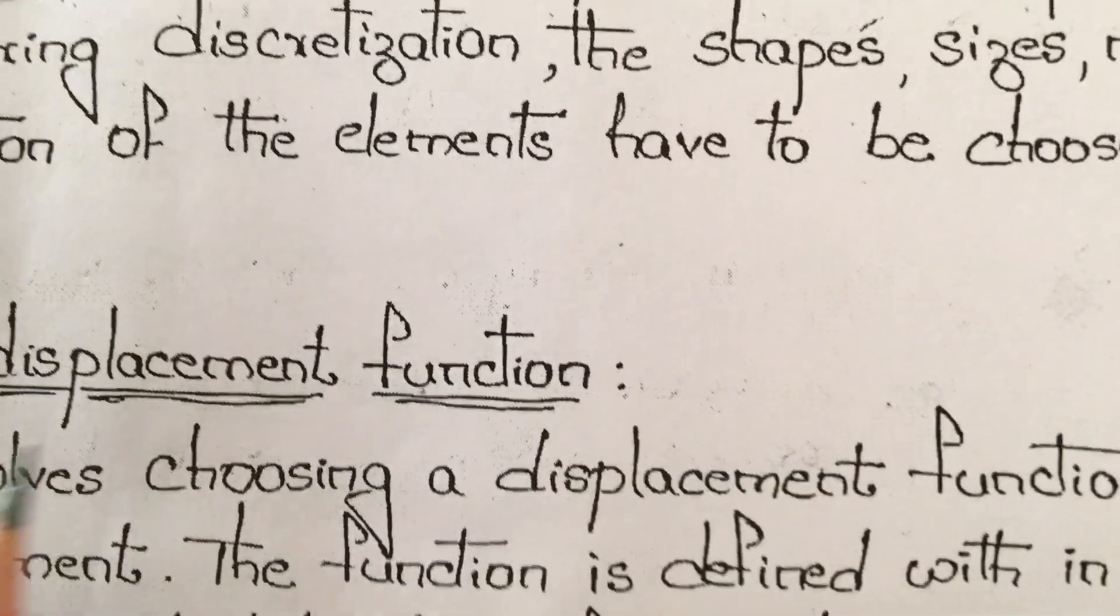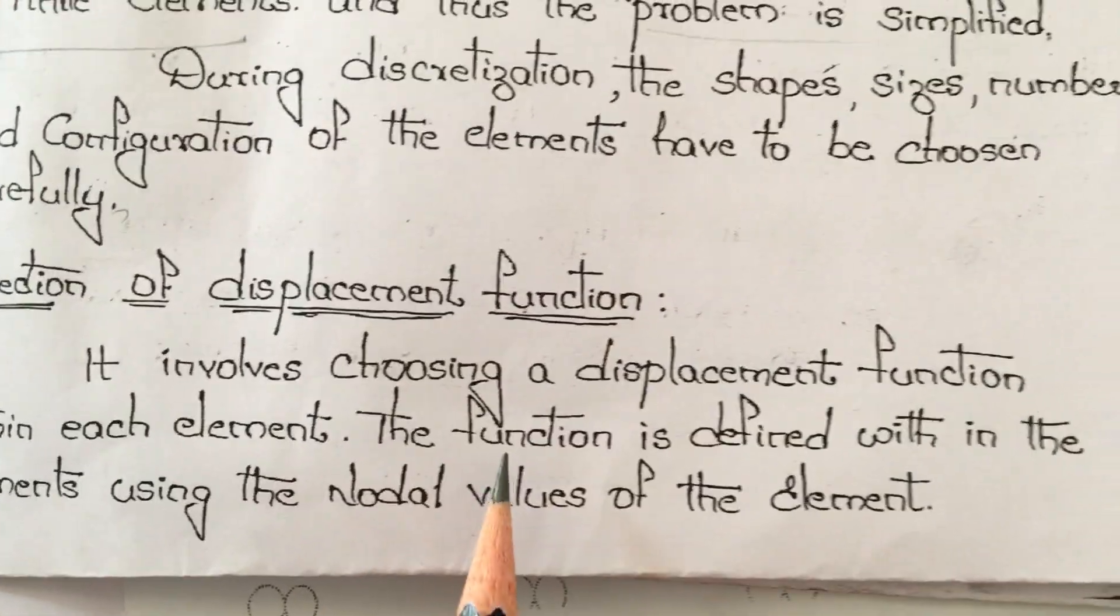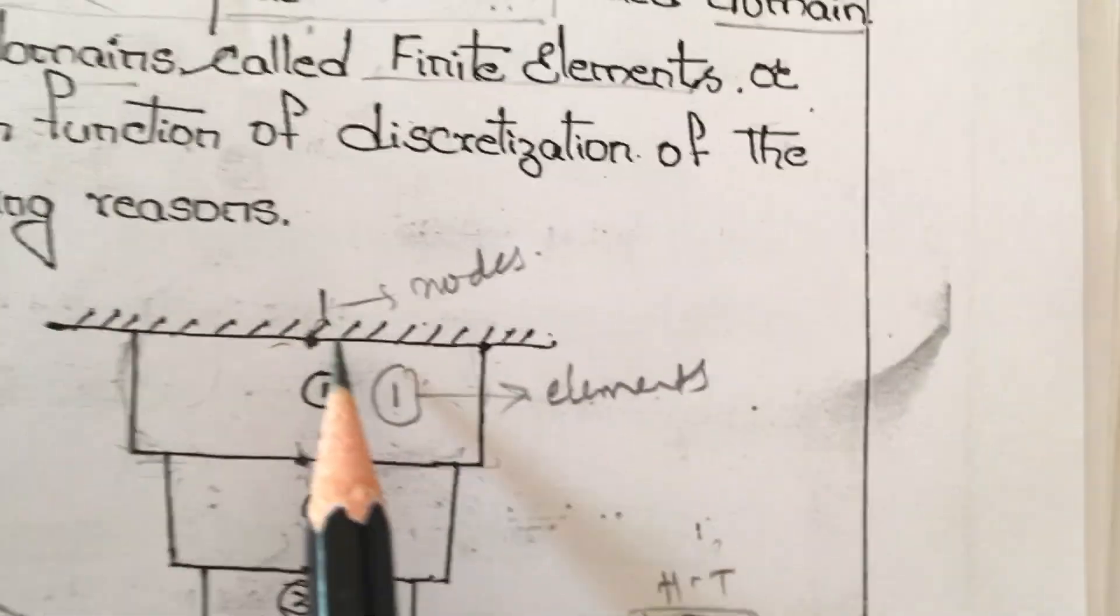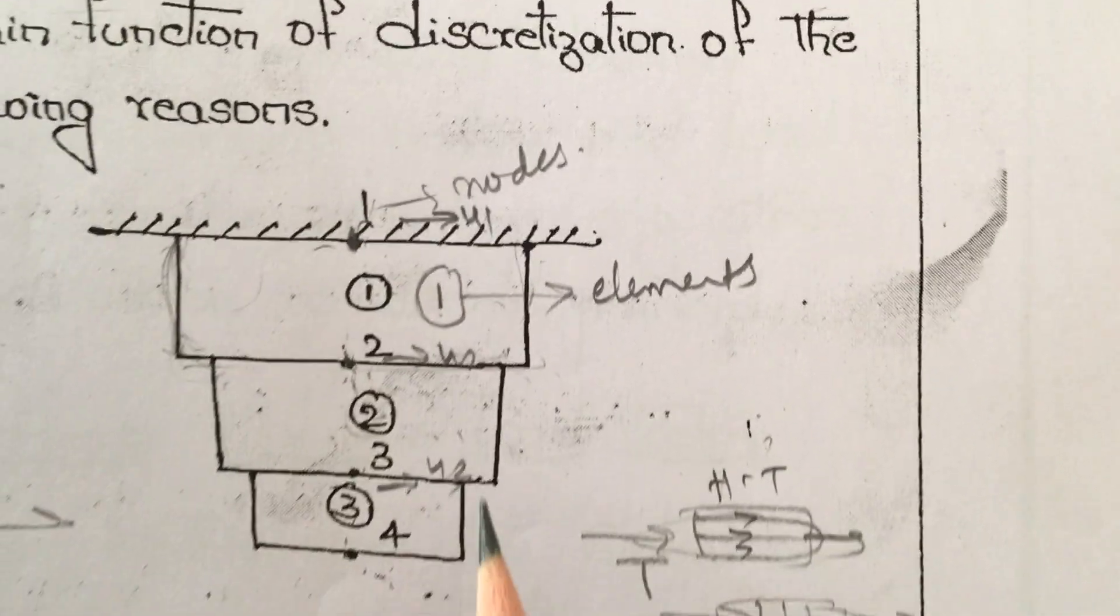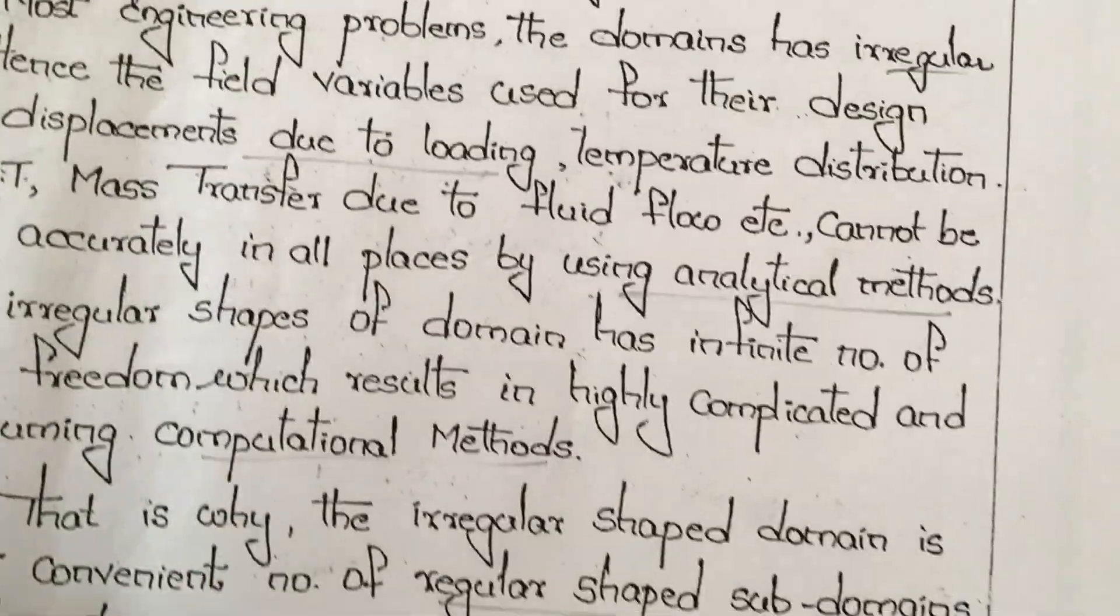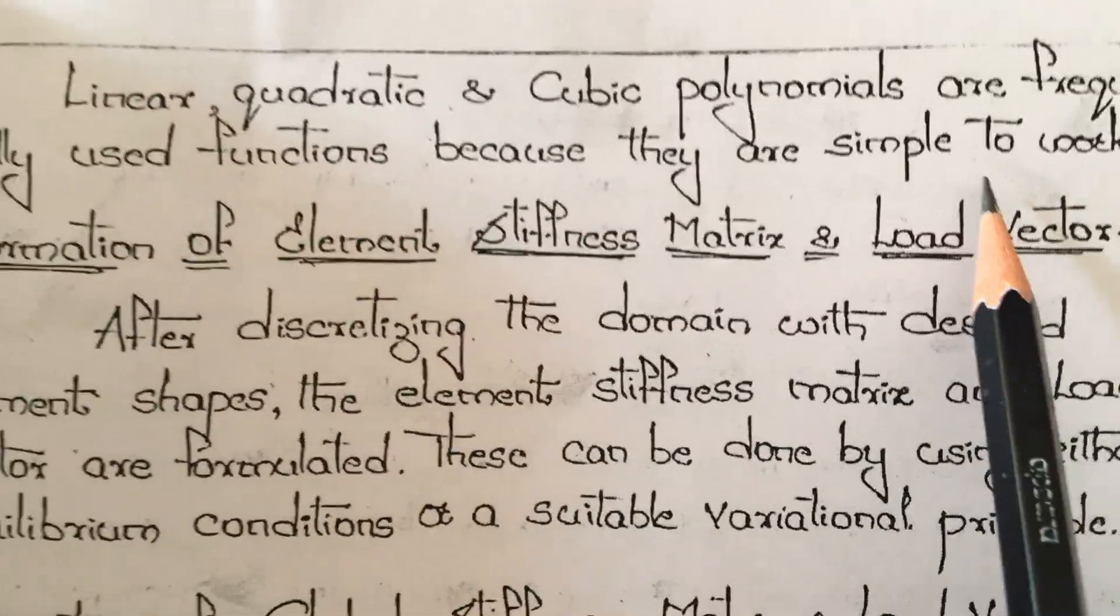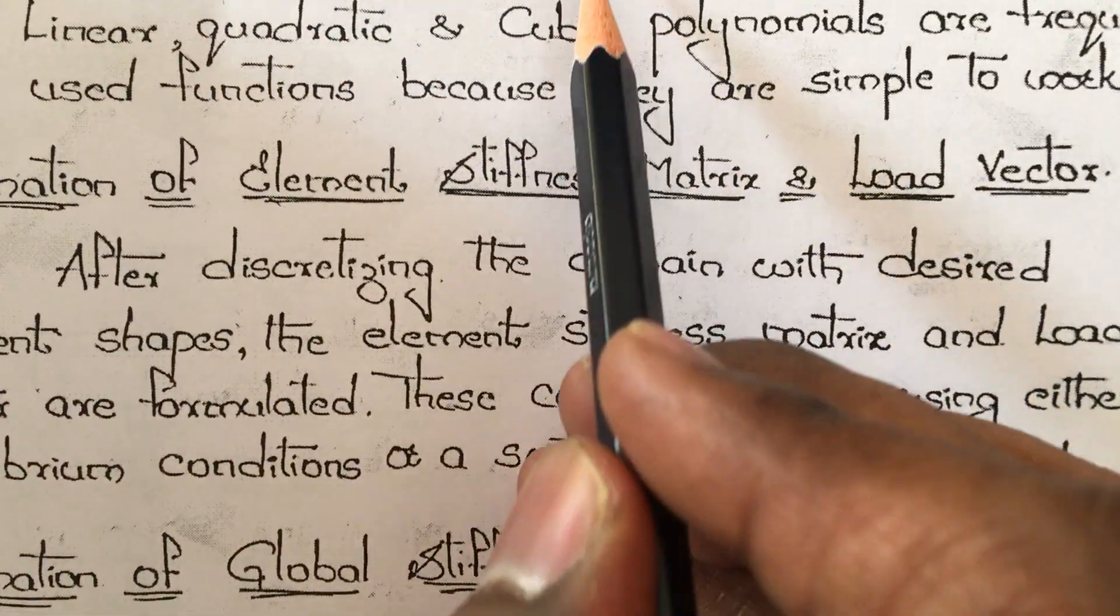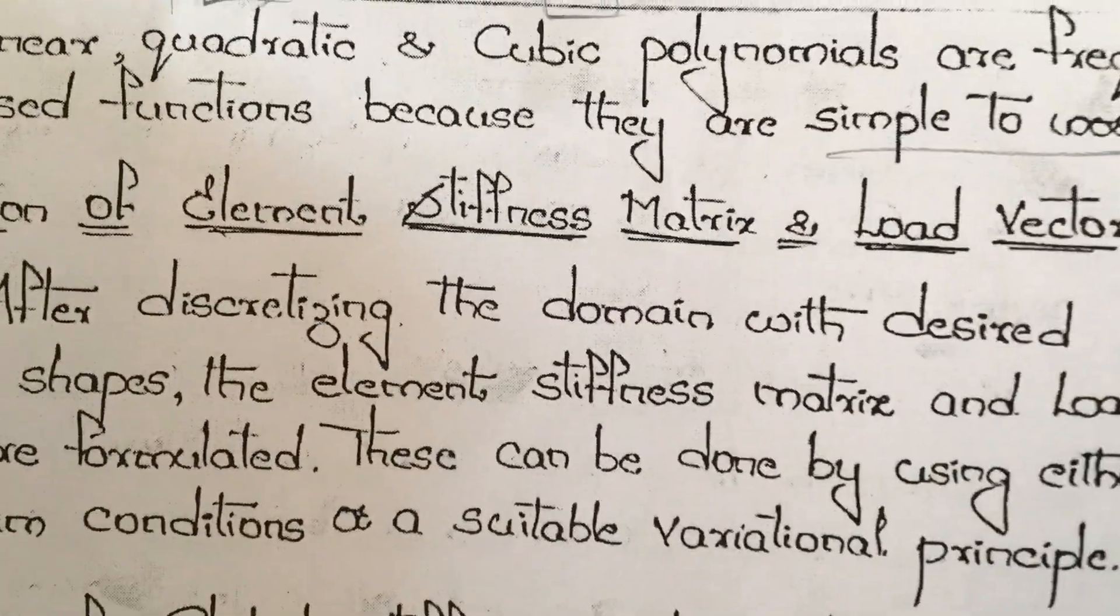The next point is selection of displacement functions. It involves choosing a displacement function within each element. The function is defined using nodal values of the element. Displacements u1, u2, u3, u4 occur at nodal points. Linear, quadratic, or cubic polynomials are frequently used because they are simple to work with.